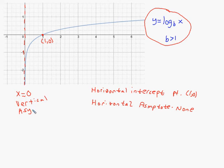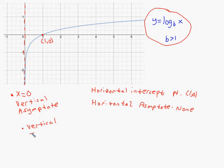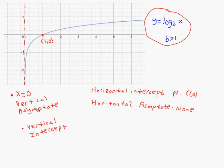A question that students confuse with the vertical asymptote is the vertical intercept — where the graph actually crosses the vertical axis. An intercept is where something intersects or crosses. Since there is a vertical asymptote at x equals 0, the graph doesn't cross or even touch the y-axis. So the vertical intercept is none, or DNE (does not exist). Similarly, the horizontal asymptote also does not exist.